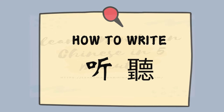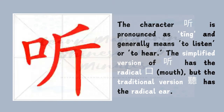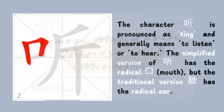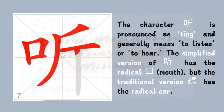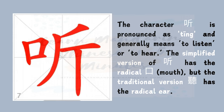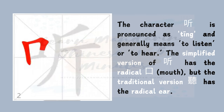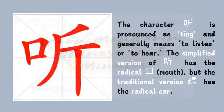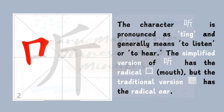Let us learn how to write this character. The character Ting is pronounced as Ting in the first tone, and generally it means to listen or to hear. The simplified version of Ting has the radical Kou, which means mouth, but the traditional version has the radical for ear. The reason why the radical for the simplified version became Kou is another story that we won't discuss here.